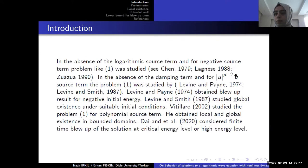Levine and Payne obtained the blow-up results for the negative initial energy. Levine and Smith studied the global existence under suitable initial conditions. Then, Liu and Smith studied our problems without logarithmic source term, and he took the source term as a polynomial source term, and obtained local and global existence in bounded domains.